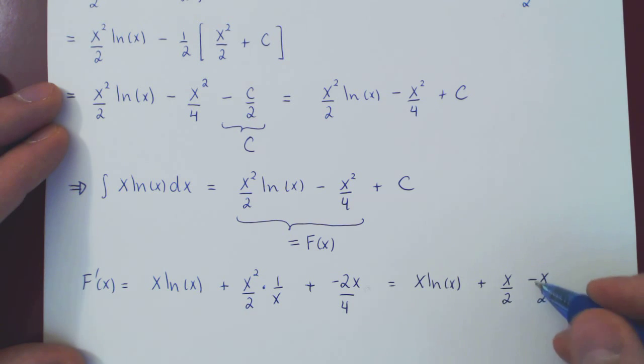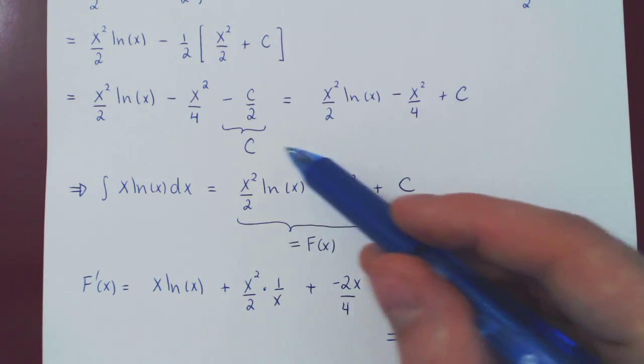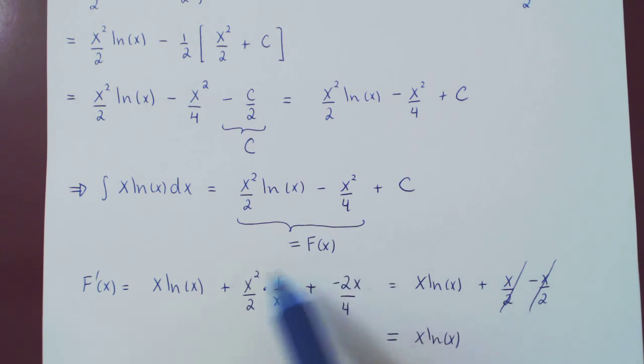So x over 2 minus x over 2 cancels, and we're left with what we hoped for, x ln of x, which is the original function. Just to verify that our first example of integration by parts gave us the right antiderivative. And that's it.